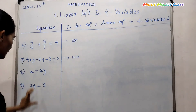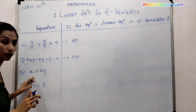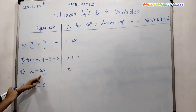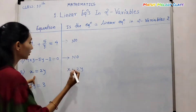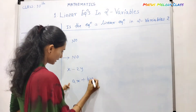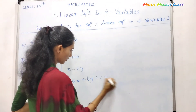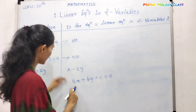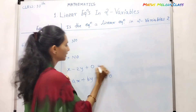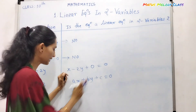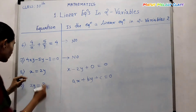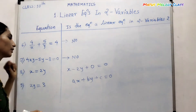Now I have some extra examples. x equals 2y can be written as x minus 2y equals zero. Looking at the general form of a linear equation in two variables, ax plus by plus c equals zero, two variables are present and their degree is one. So this is a linear equation in two variables.